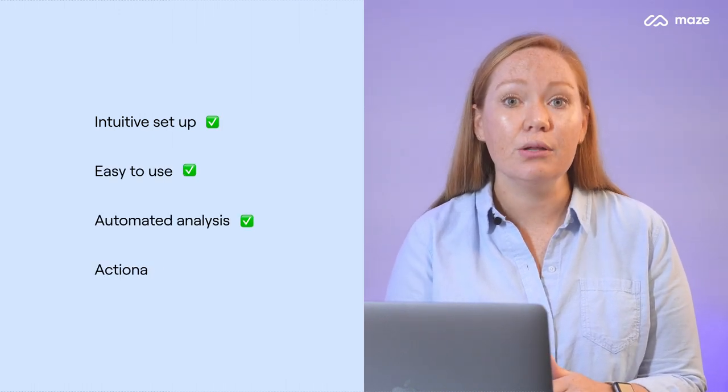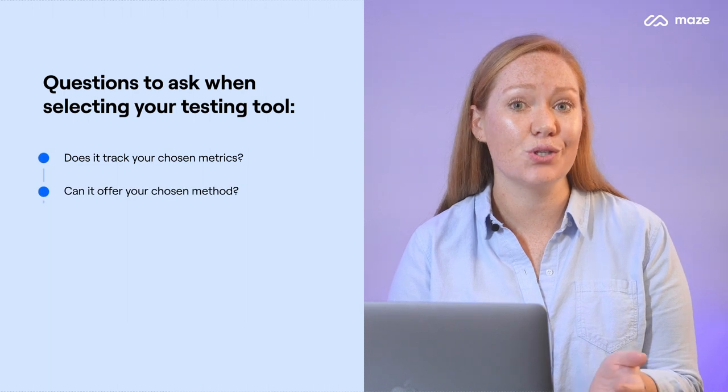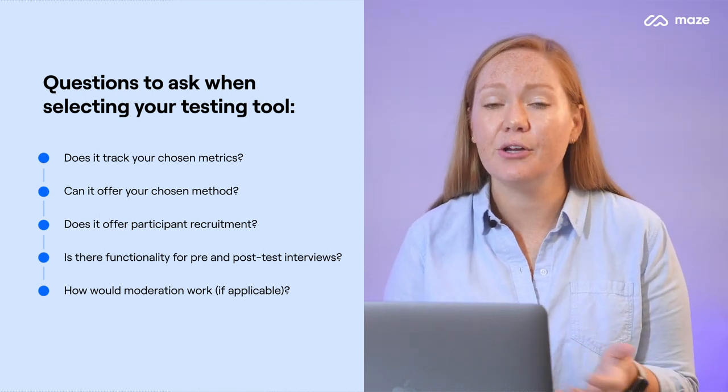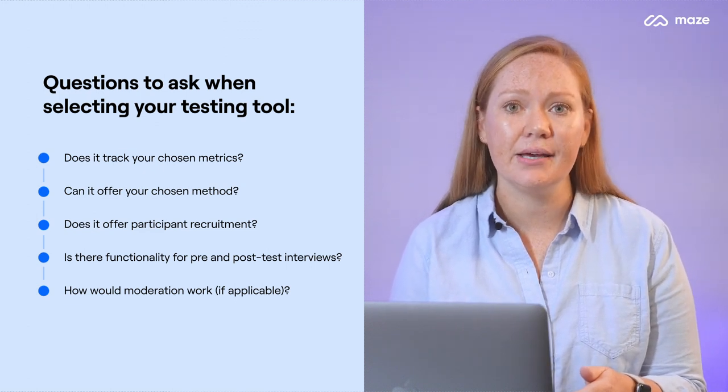These can often be available within an online testing platform, so it's worth deciding if you want those features before choosing your platform. Step three is to start thinking about what you're going to use to run your test. The majority of remote usability testing takes place through an online research platform like Maze. Choosing to test through a platform has a lot of advantages, from easier setup and testing to quick analysis and access to insights. Remote research tools can also come with built-in features like participant recruitment, quick build tests and templates, follow-up questions, and automated analysis of results. When looking at the different tools out there, think about your evaluation criteria — what are you measuring and does the tool keep track of that? Think about your testing method — can the tool test in the way you want it to? And think about your participants — certain tools include participant recruitment, pre- and post-test interview functionality, and even participant screening.